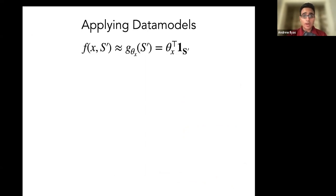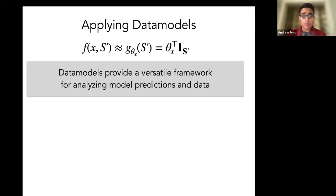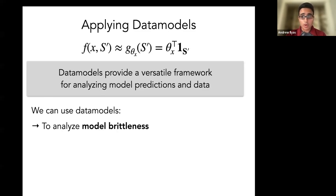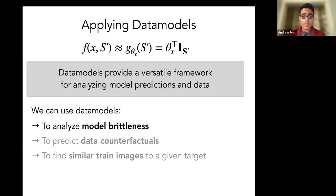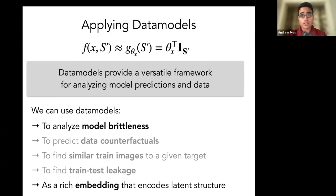We have a primitive where whenever we want to know what would happen if I trained on training set S' and evaluated on test example X, instead of running the full training, I can just do a simple inner product and get an approximation. In our paper, we show that data models provide a really versatile framework for analyzing both models and data. We did this through applications including analyzing model brittle predictions, predicting data counterfactuals, finding similar training images to a given target, detecting train-test leakage in modern datasets, and using data models as a rich embedding. In this presentation I'm only going to talk about the first and last of these.